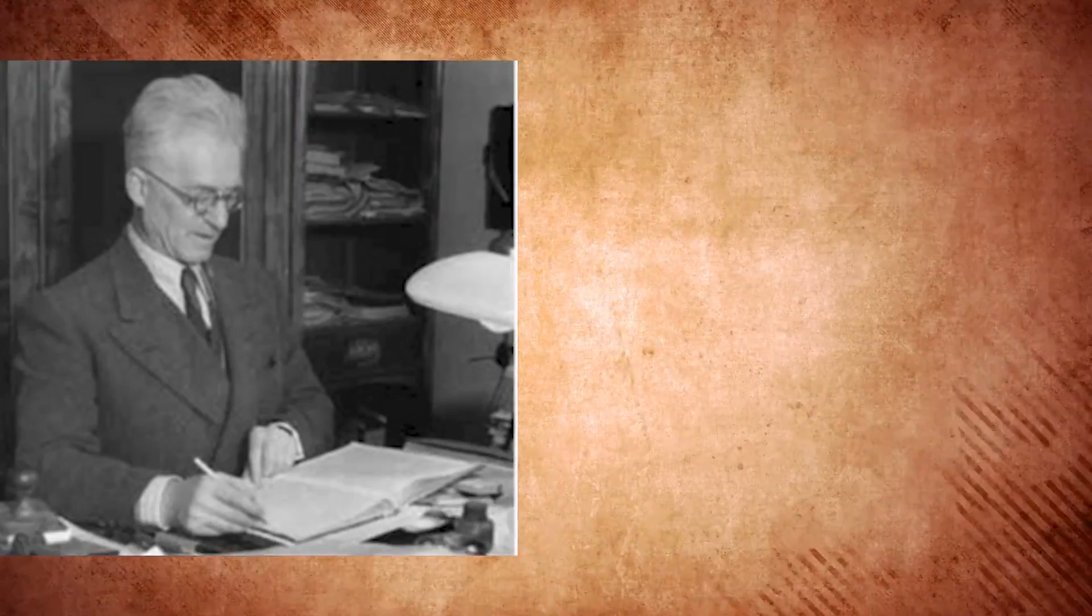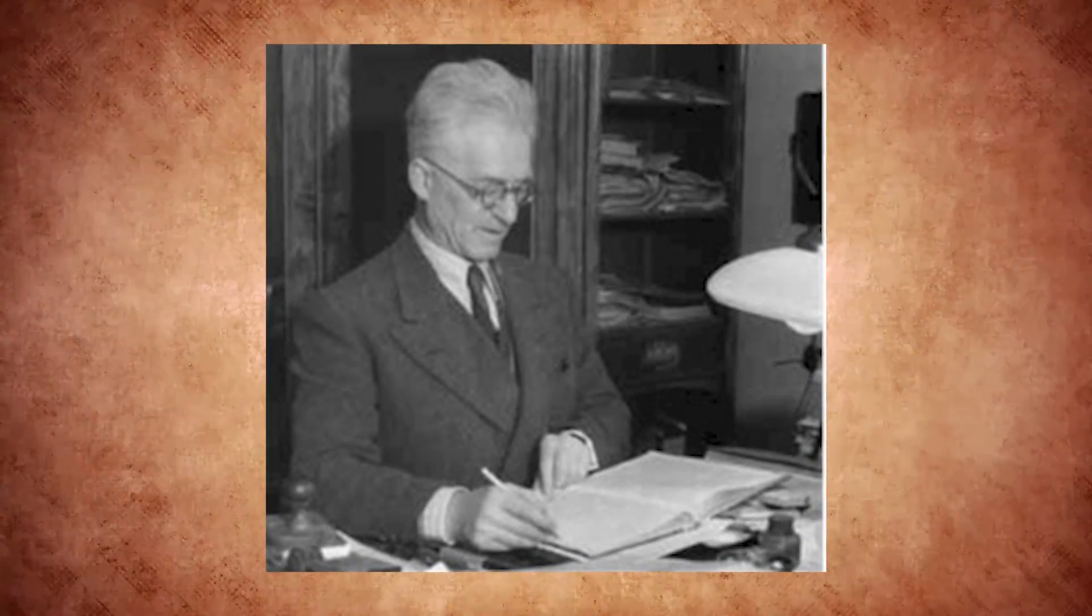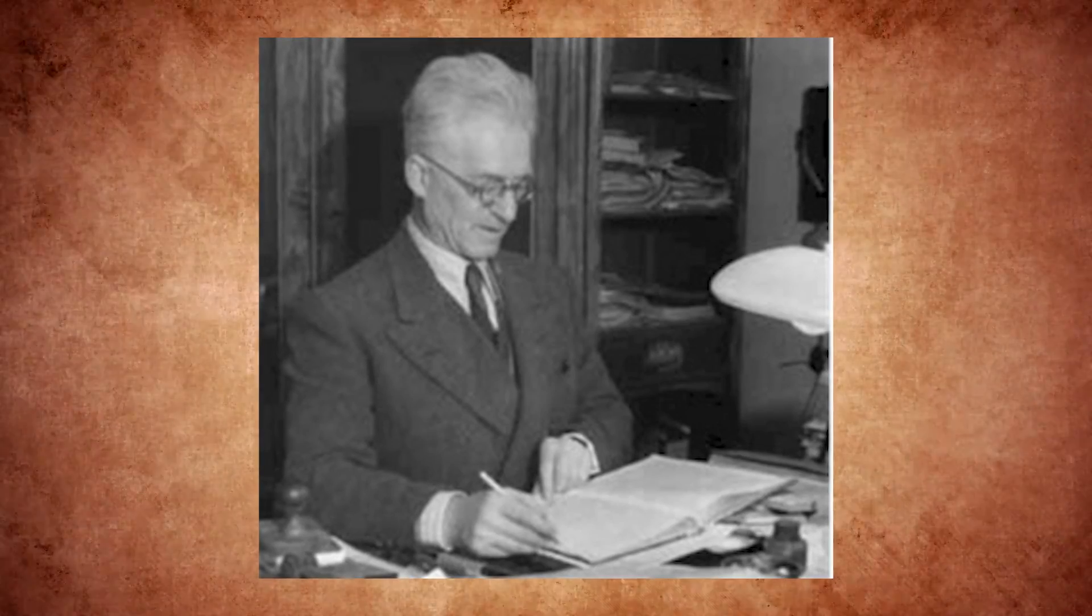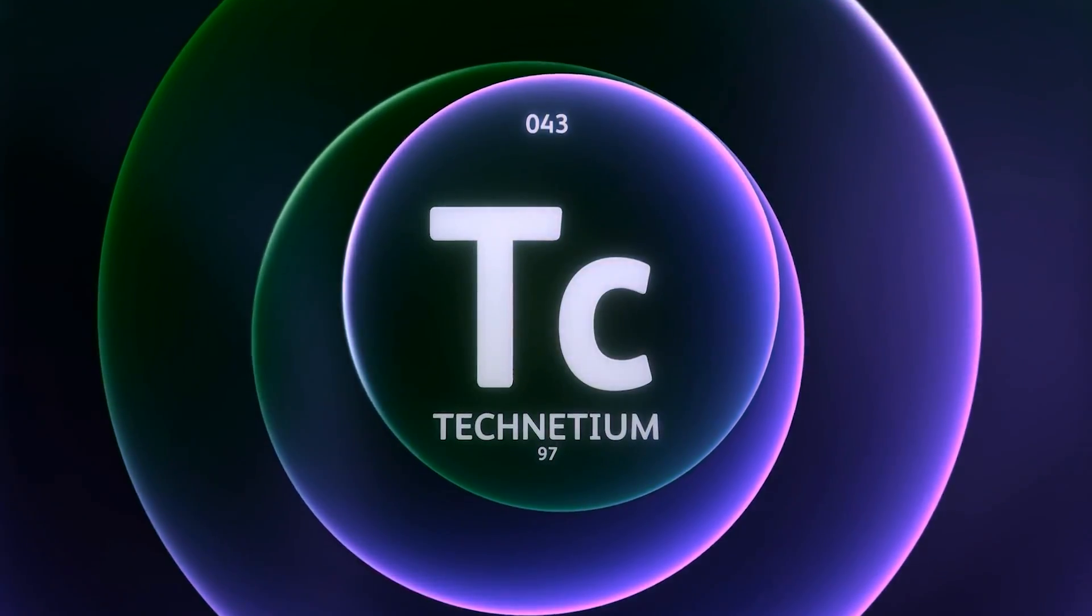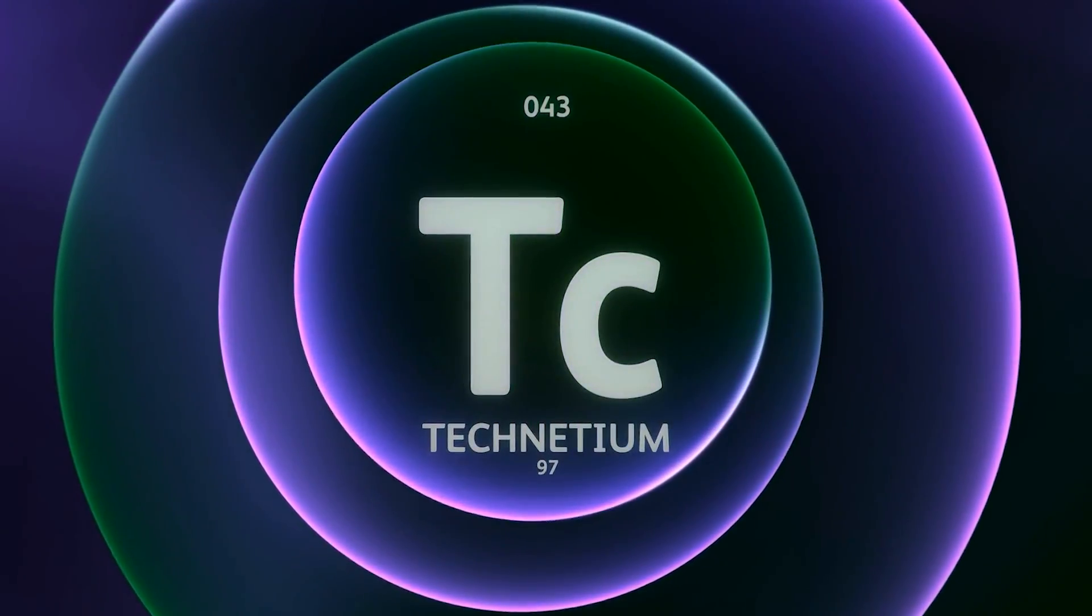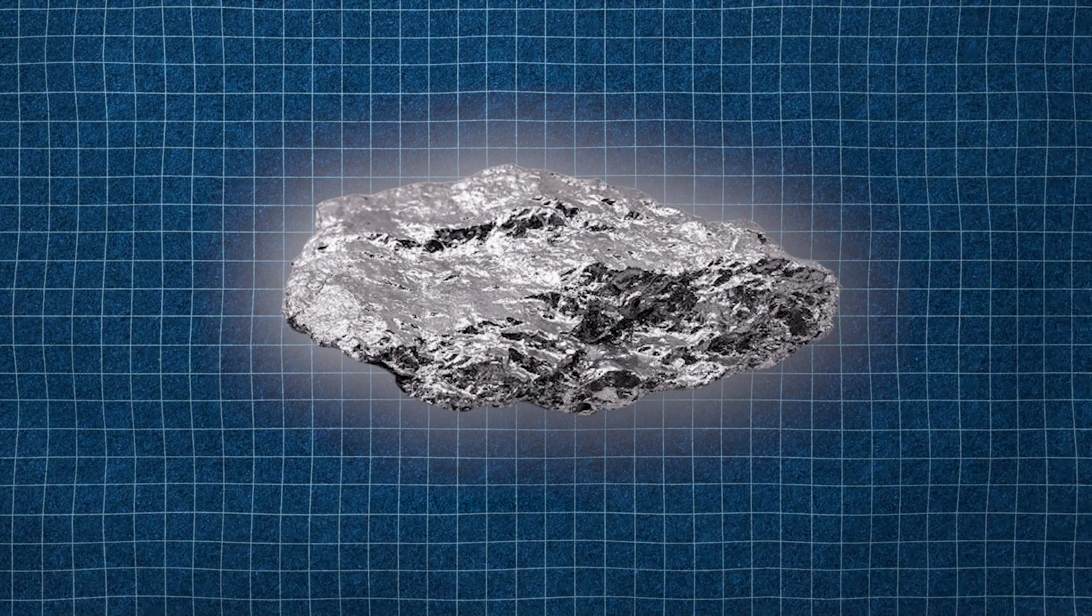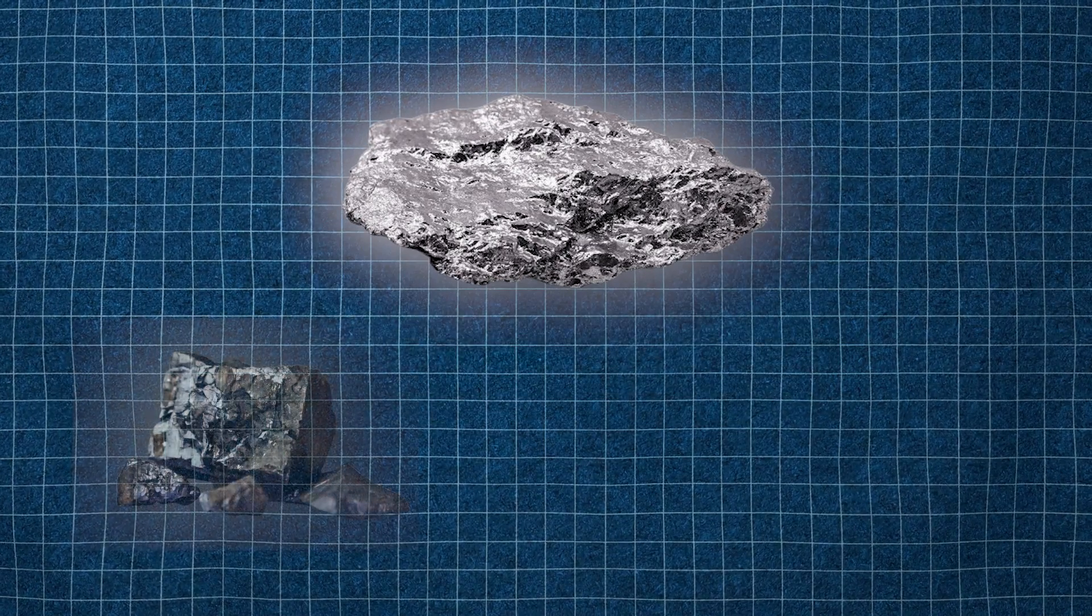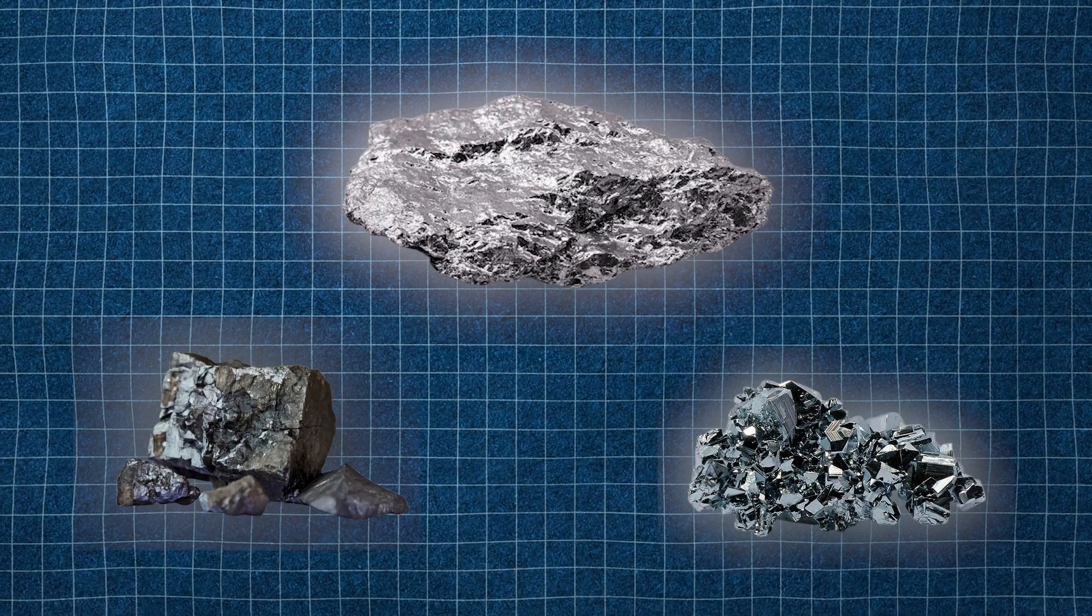And Segre, along with his colleague, Carlo Perrier, discovered that some of the molybdenum had gained a proton, transforming it into element 43. They named this new element technetium, derived from the Greek word for art or craft, essentially meaning a crafted element. Technetium is a silvery-gray metal with chemical properties that fall between those of manganese and ruthenium, the elements directly above it and below it on the periodic table.